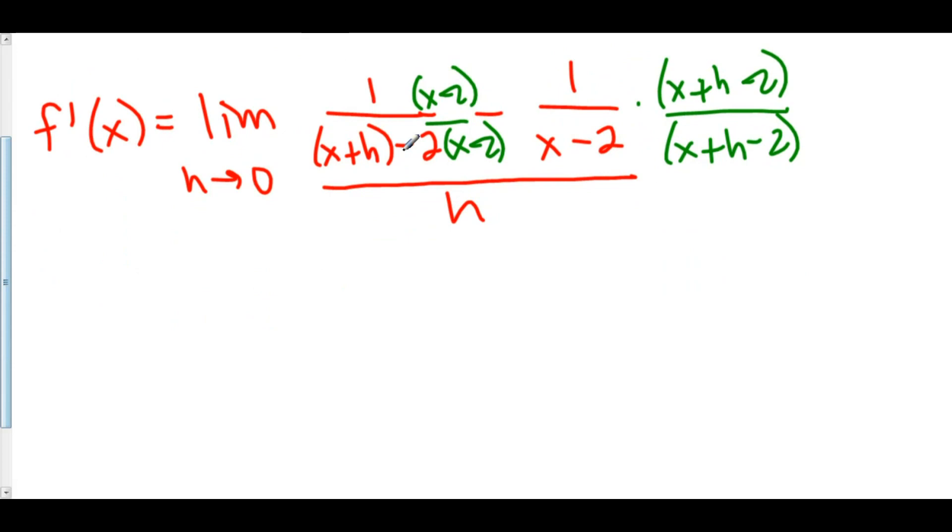I'll multiply this fraction by x minus 2 over x minus 2. And that would give us a common denominator in the upper part of our fraction. So here we have, this is the limit as h approaches 0 of x minus 2 over x plus h minus 2 times x minus 2.